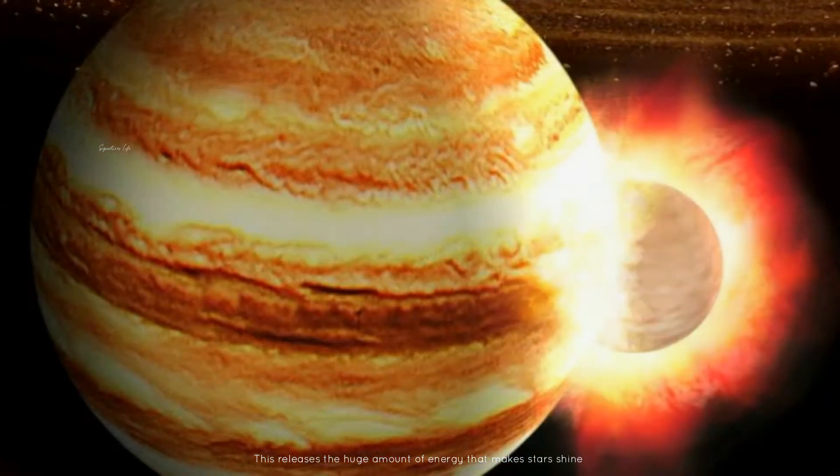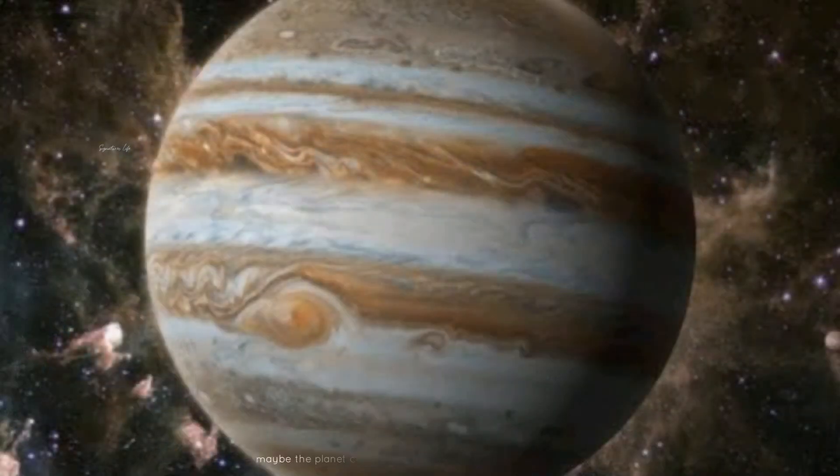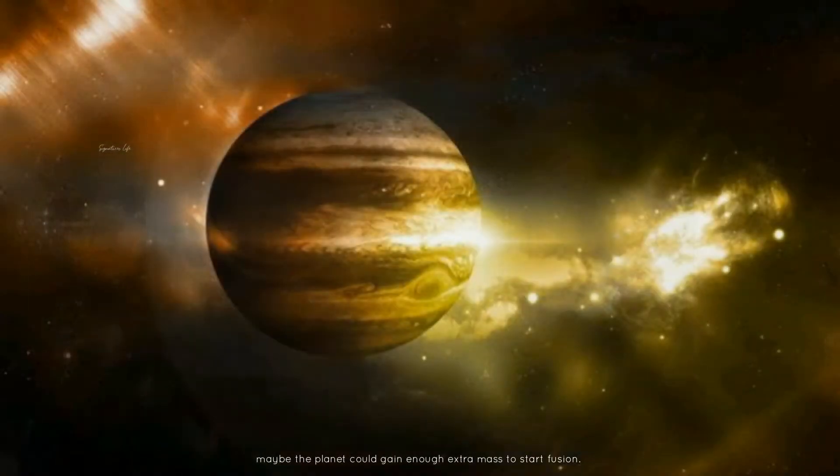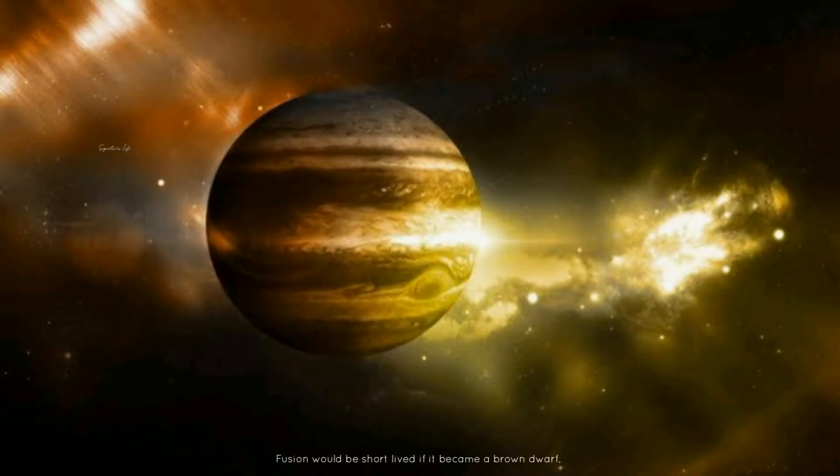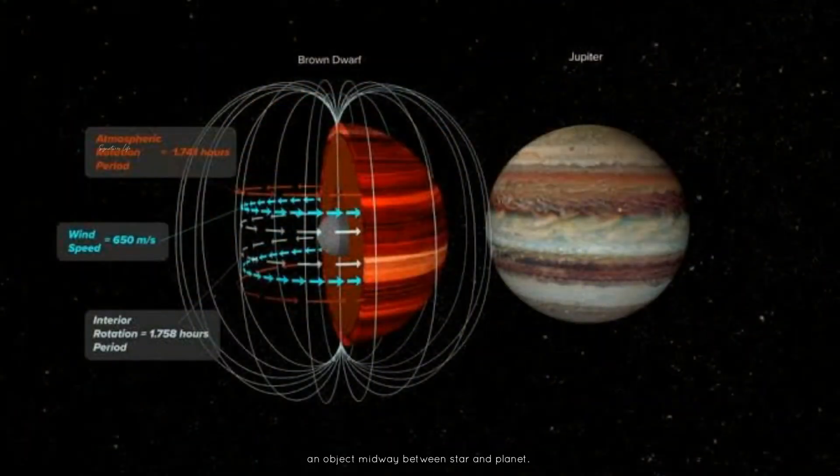This releases the huge amount of energy that makes stars shine. If a large cloud of interstellar gas came Jupiter's way, maybe the planet could gain enough extra mass to start fusion. Fusion would be short-lived if it became a brown dwarf, an object midway between star and planet.